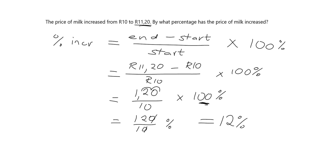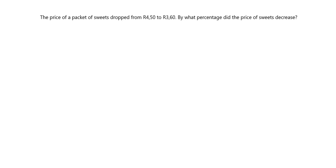Can you see what we're saying here? If you took R10 and added 12 percent of that R10, that's when you'd get to R11.20. So the answer is the price of milk has increased by 12 percent.